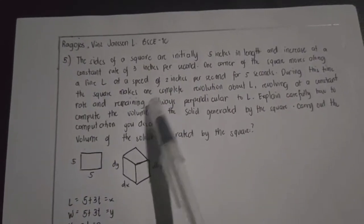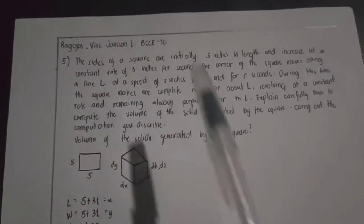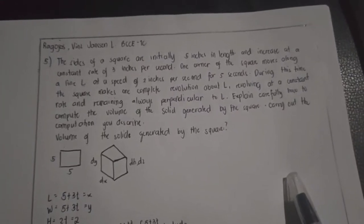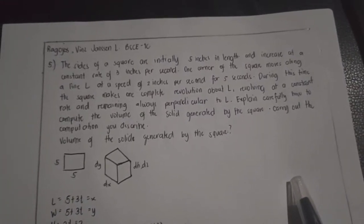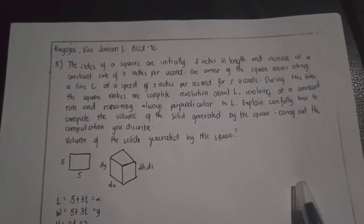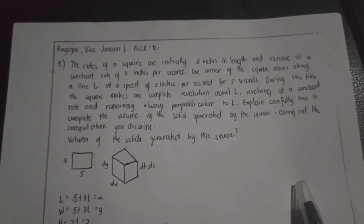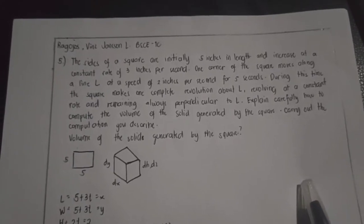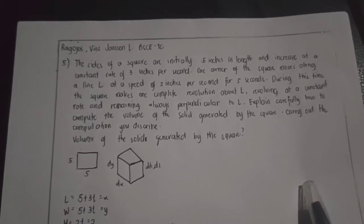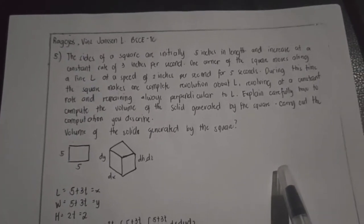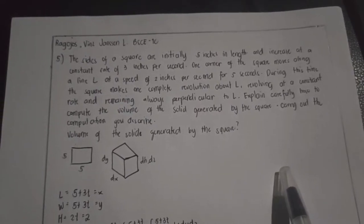Problem number 5. The sides of a square are initially 5 inches in length and increase at a constant rate of 3 inches per second. One corner of the square moves along a line L at a speed of 2 inches per second for 5 seconds.